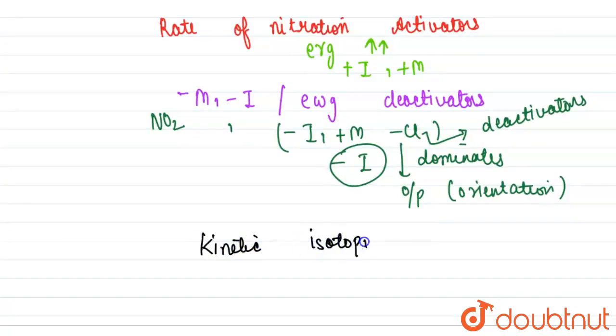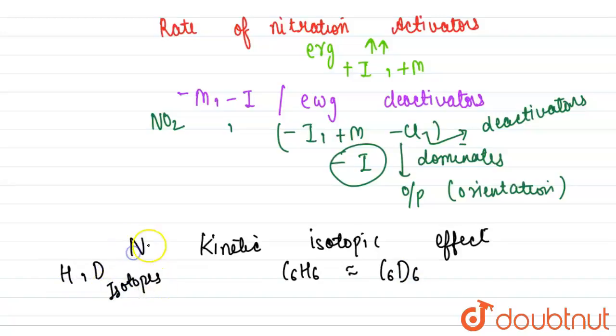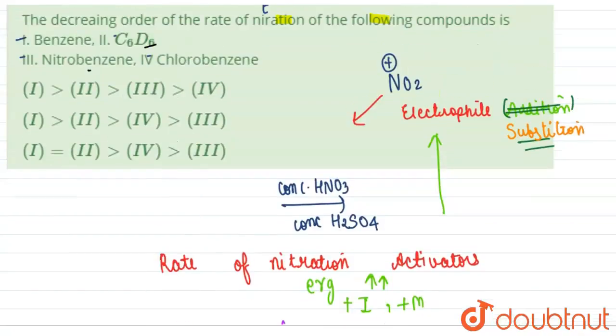Rate of C6H6 will be equal to C6D6 because hydrogen and deuterium are isotopes. There is no kind of kinetic isotopic effect. So as we can see, the highest rate will be for benzene and C6D6.